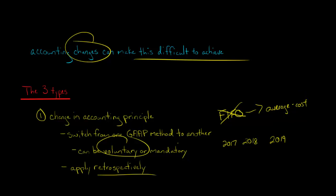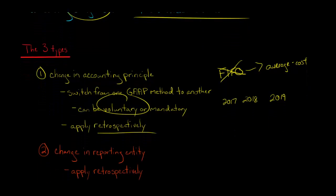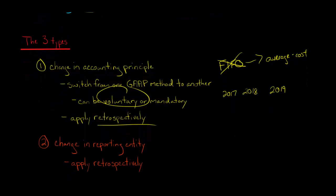A mandatory change could occur when a U.S. firm is required to comply with a new rule issued by the Financial Accounting Standards Board (FASB). In that case, there's a change in accounting principle because there's a new GAAP requirement and the company has no choice but to make the change. Either way — voluntary or mandatory — a change in accounting principle requires going back and redoing the prior period financial statements retrospectively.